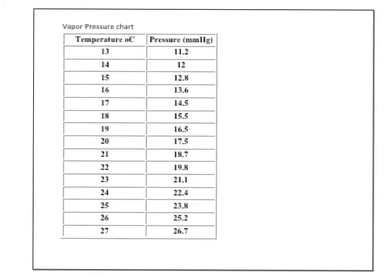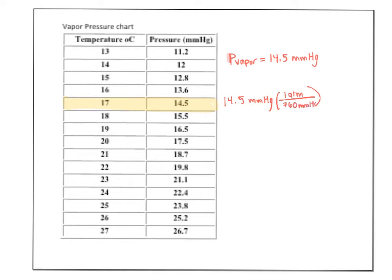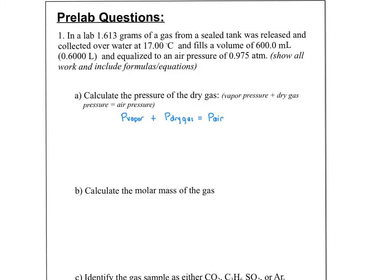To find the vapor pressure, use the chart on the front of your lab — knowing the water temperature lets you look up the vapor pressure. In this pre-lab problem, the water temperature was 17°C, which means the vapor pressure is 14.5 mmHg. Converting to ATM: 14.5 divided by 760 gives 0.0191 ATM.